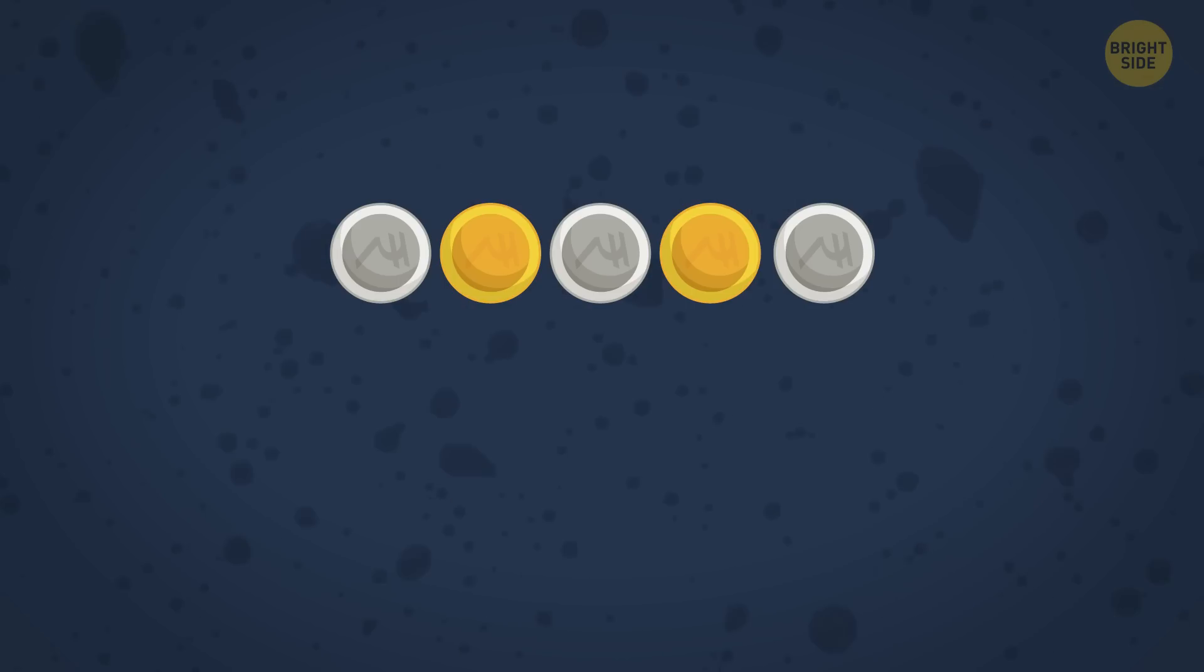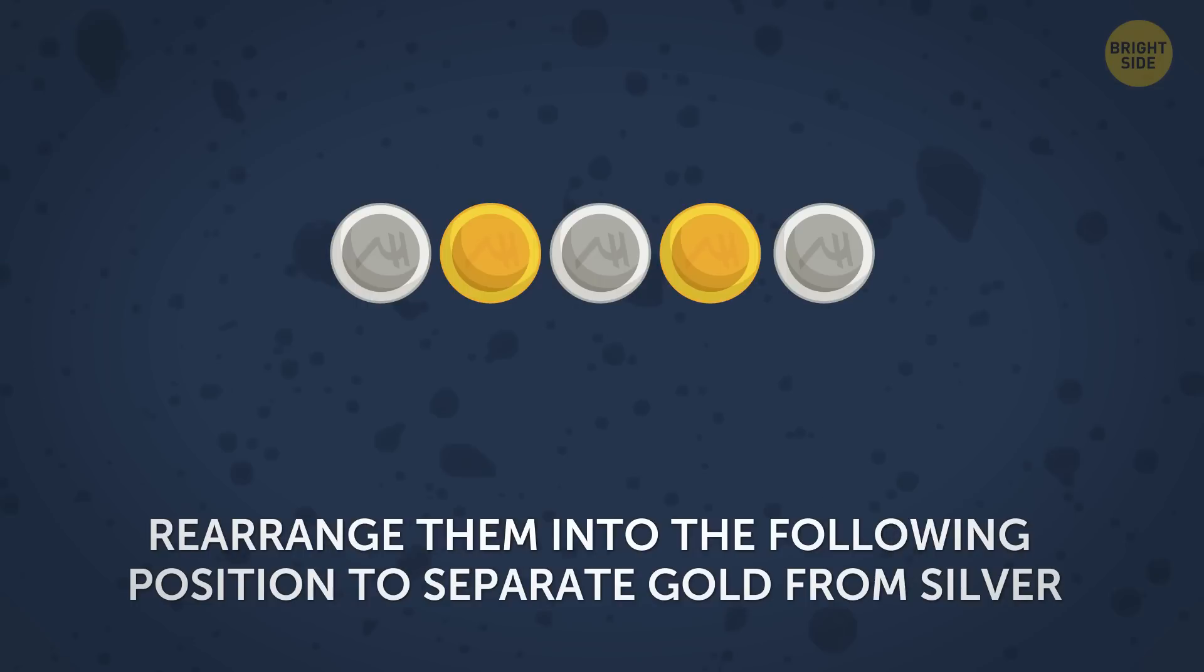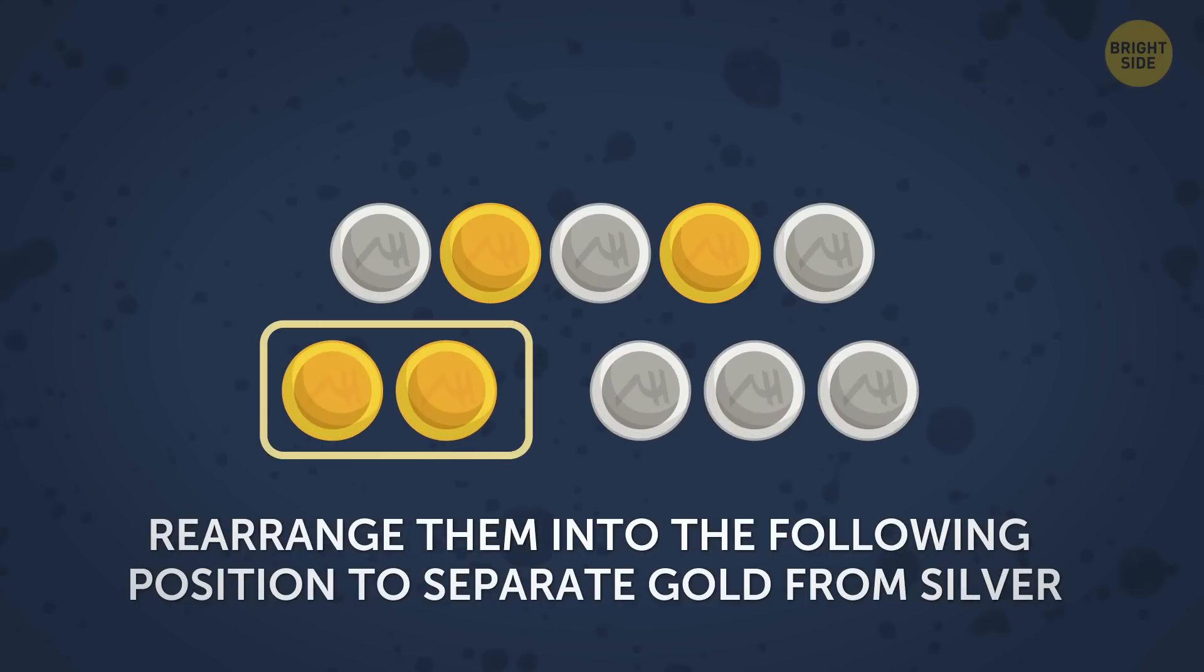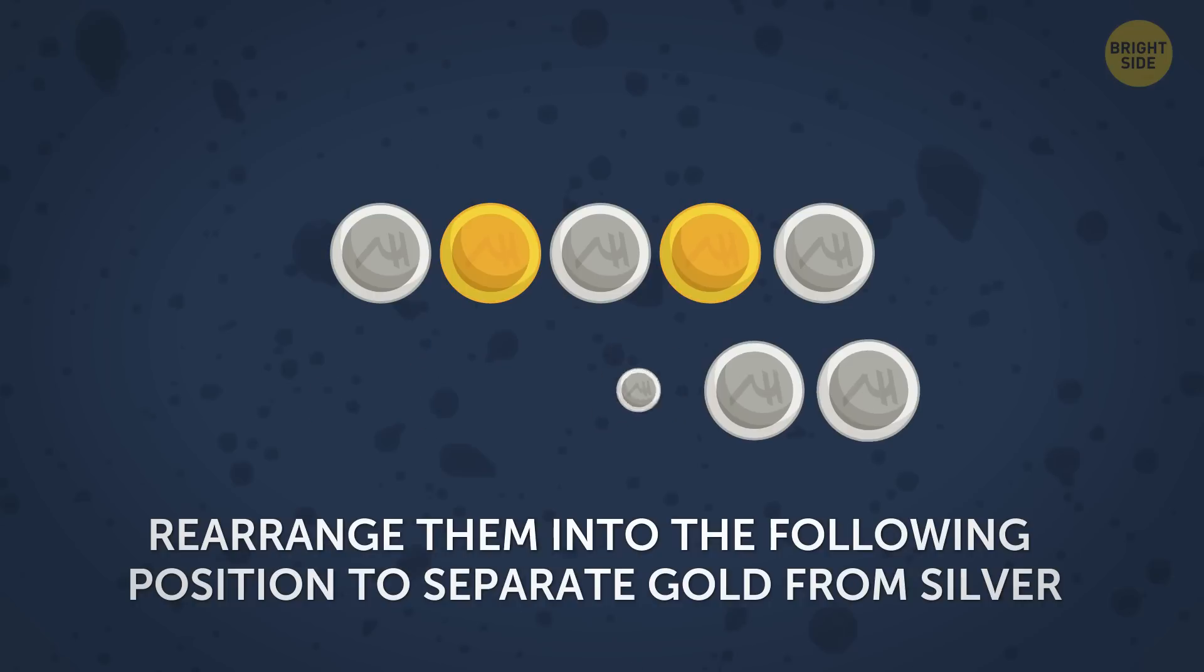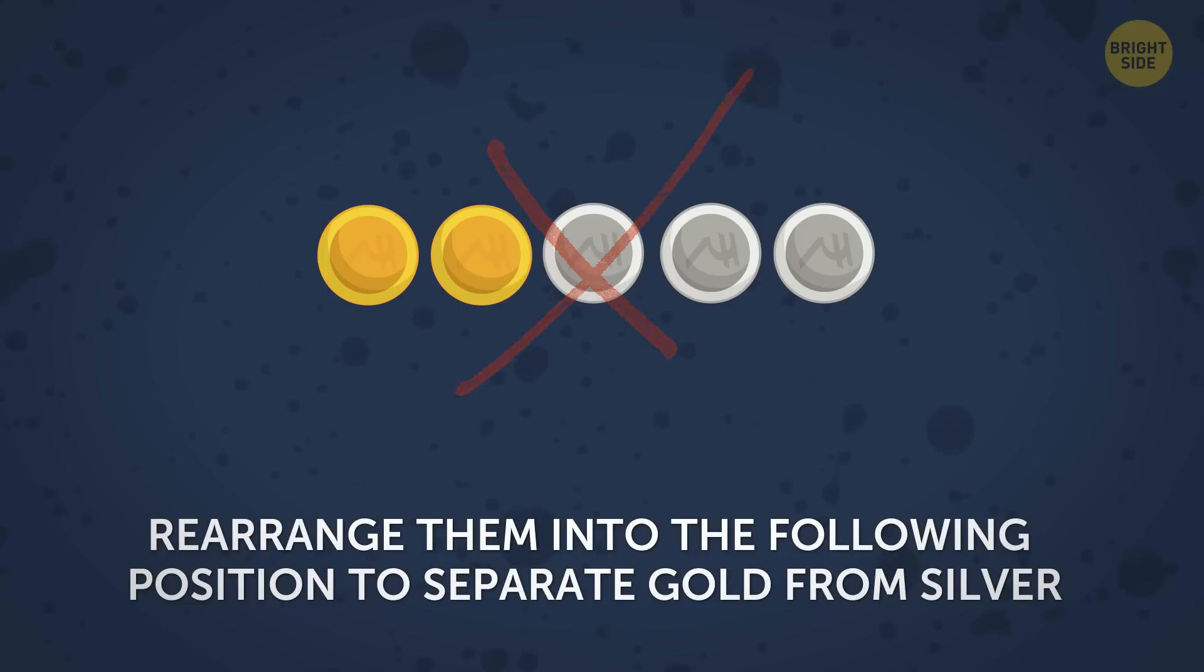The next puzzle is harder than it looks. There are 3 silver coins and 2 gold coins on the table. They are set up one by one. And the challenge is to rearrange them into the following position to separate gold from silver in just 5 moves. But there's a catch. You can only move a pair of gold and silver coins together. They have to touch each other. For example, this move is okay, but you cannot make it this way.